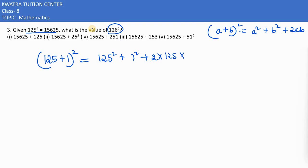So 125 square is already known, that's 15625. Add 1 squared, and 2 into 125 into 1, which is 250. What are the last two numbers? That's 251.